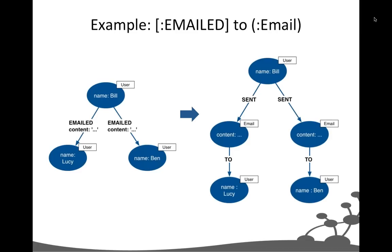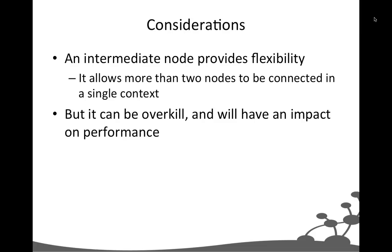The key points about intermediate nodes: they provide a lot of flexibility. If you're modeling something as a relationship for convenience or performance — and it can only ever connect two things — that's probably okay. But if you feel you'll want to introduce other dimensions in the future, it's far better from the outset to model it as an intermediate node. Remember, intermediate nodes allow more than two things to be connected in the same context, representing all the different dimensions of a fact.